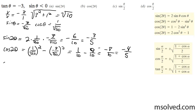The half angle of the sine is going to be a positive value, because the half angle takes you up to quadrant 2. So it's going to be the positive square root of 1 minus the cosine — which is 1 over the square root of 10 — all over 2.